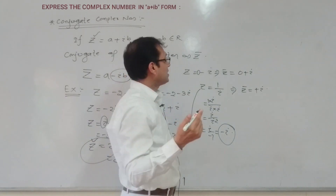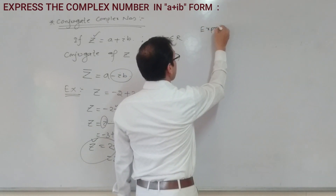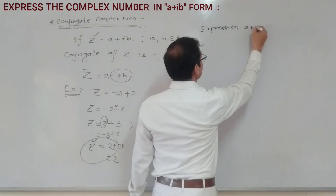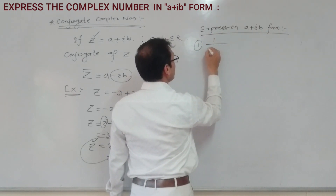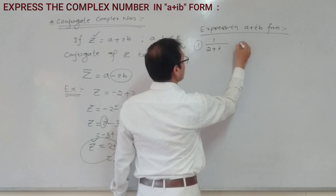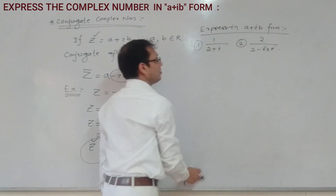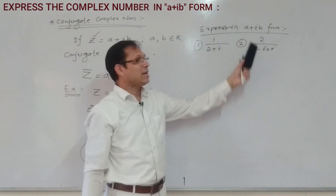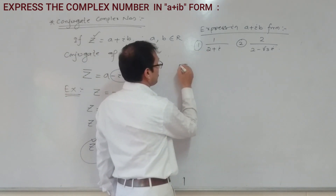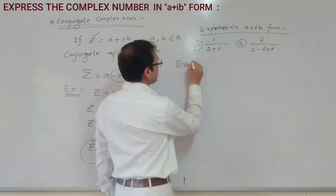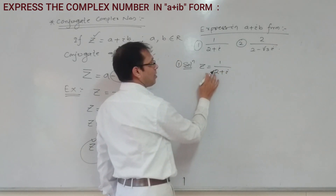Now suppose you have to express in a plus iB form. Question 1 is 1 by (2 plus i), and question 2 is 2 by (2 minus root 3 i). For question 1, Z is equal to 1 by (2 plus i). We will multiply numerator and denominator by the conjugate.